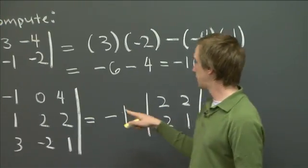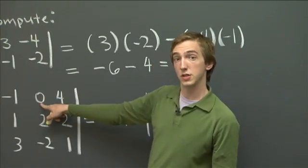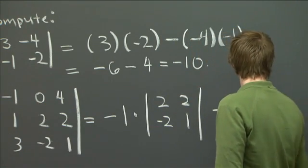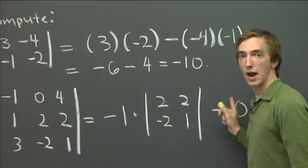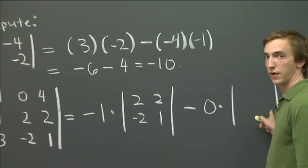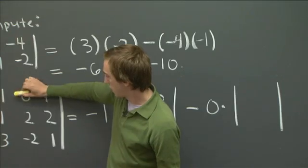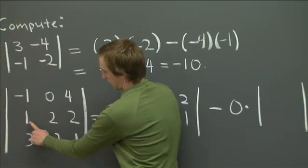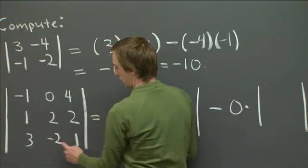The next entry, we have to take negative of this entry. But this entry is 0. So minus 0 times. Just for practice, why don't I put in this cofactor here anyways. So again, we cover up the row and the column containing the 0. And we have this matrix, 1, 2, 3, 1.